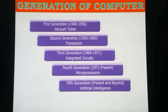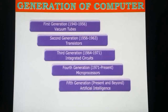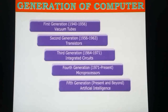Now I will discuss the generations of computer. The first generation of computer had a duration of 1940 to 1955, and vacuum tubes were used. The second generation was 1956 to 1963. The third generation was 1964 to 1971. The fourth generation is from 1971 to the present — that is the computer we are using today. The fifth generation is the upcoming, or future, computer.